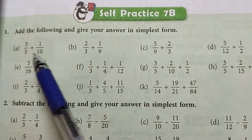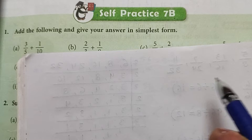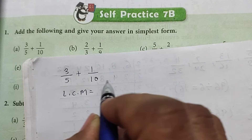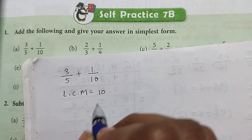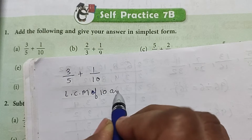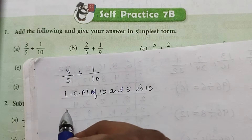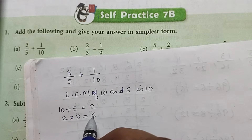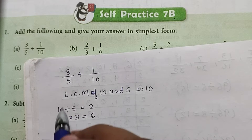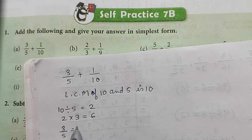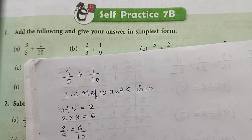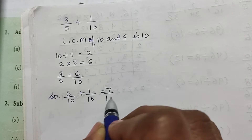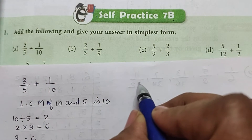Let's start. Part a is 3/5 plus 1/10. LCM of 10 and 5 is 10. So 10 divided by 5 is equal to 2, and 2 multiplied by 3 is equal to 6. So 3/5 is equal to 6/10. Therefore 6/10 plus 1/10 is equal to 7/10.